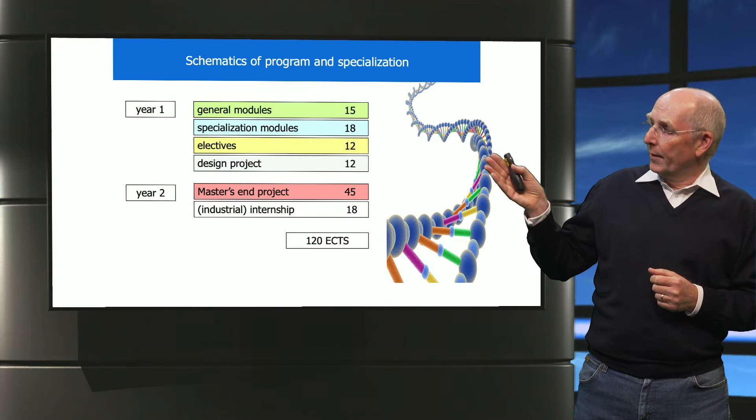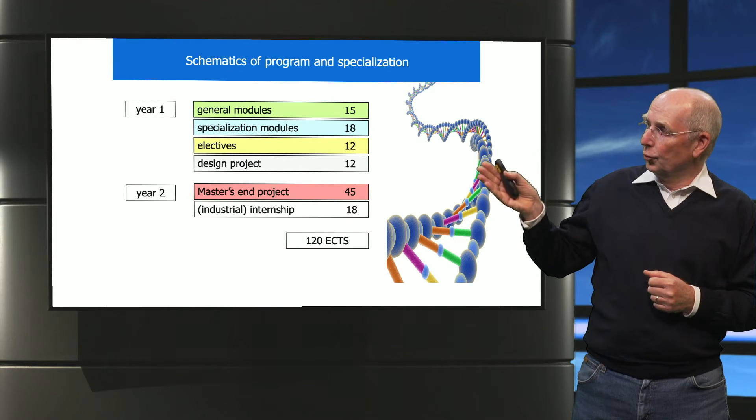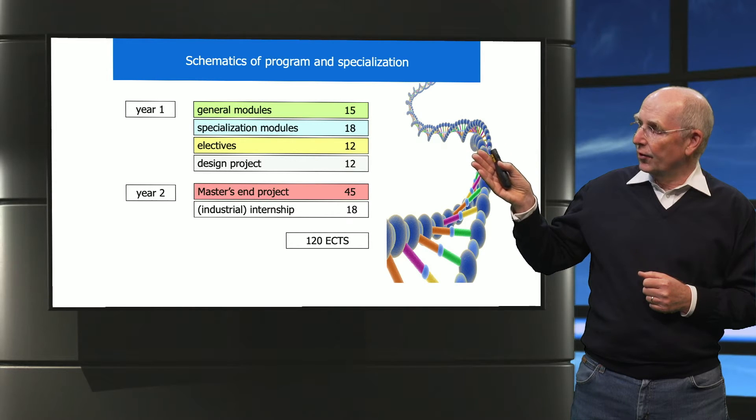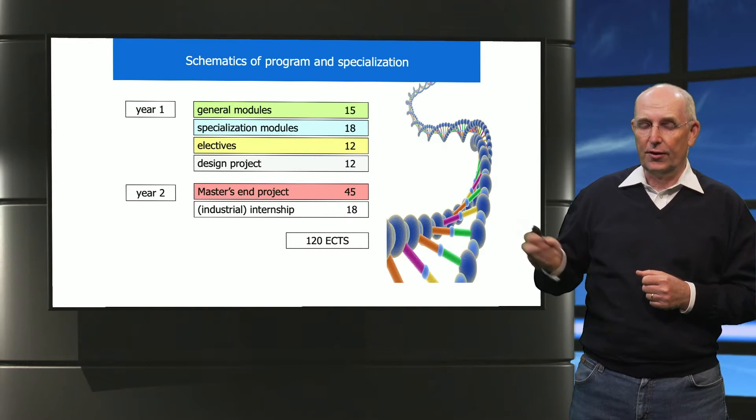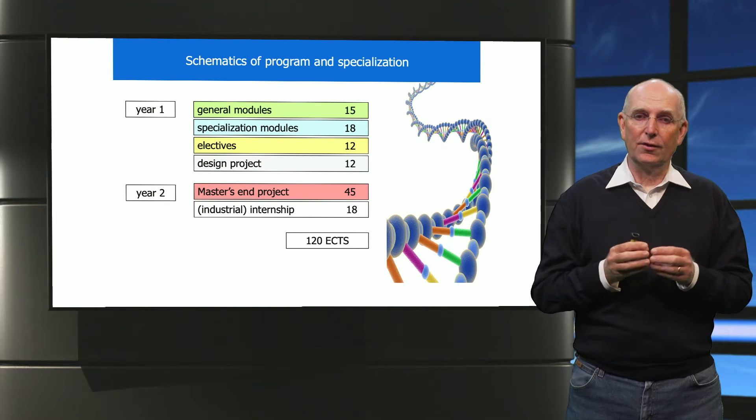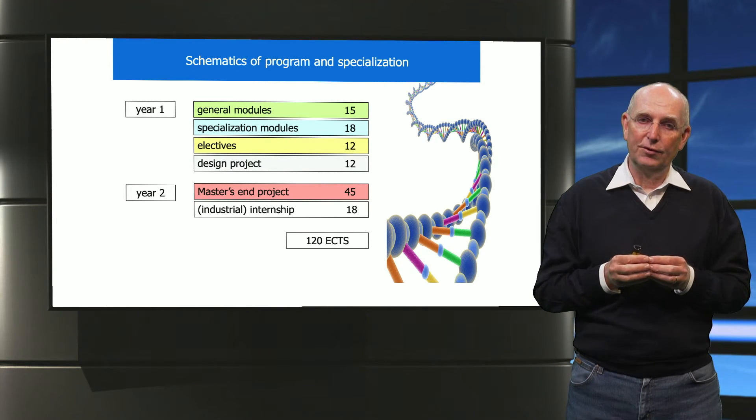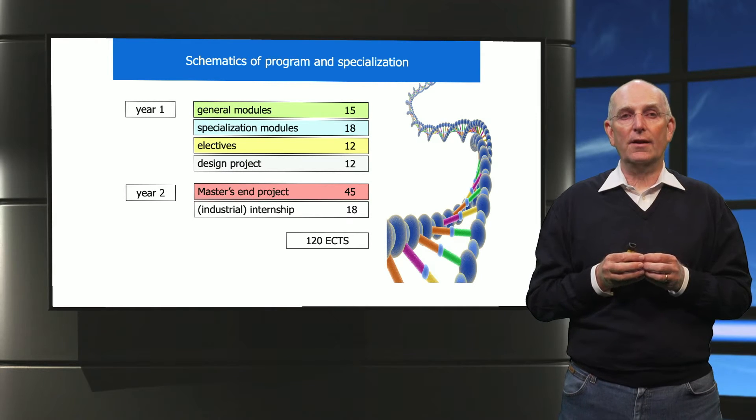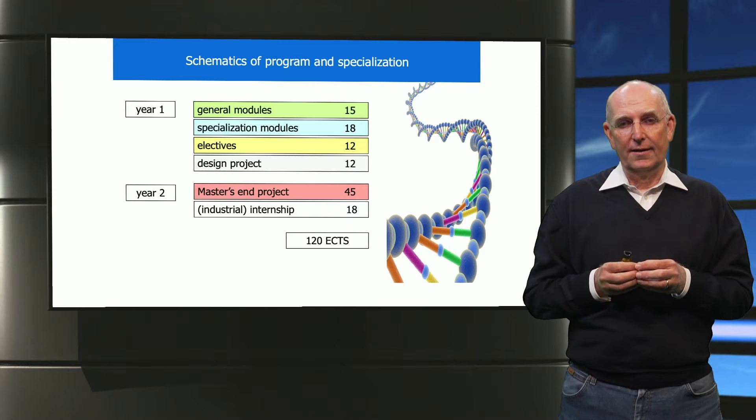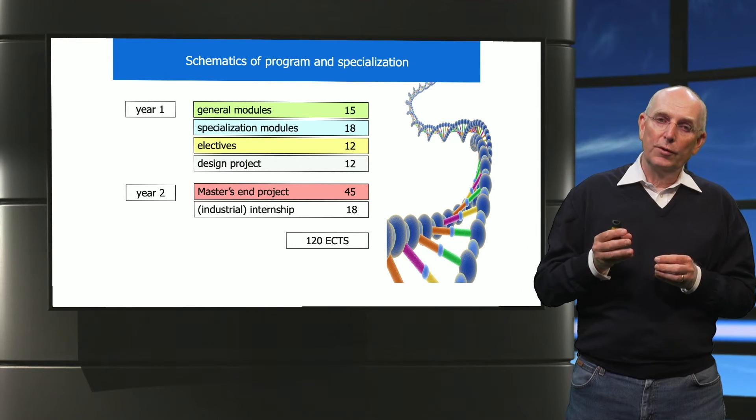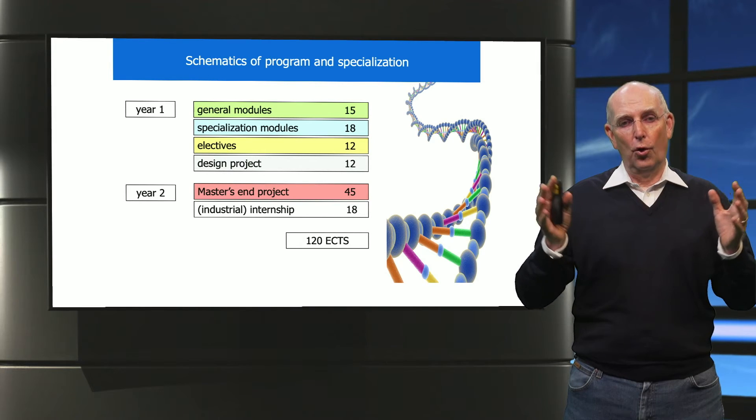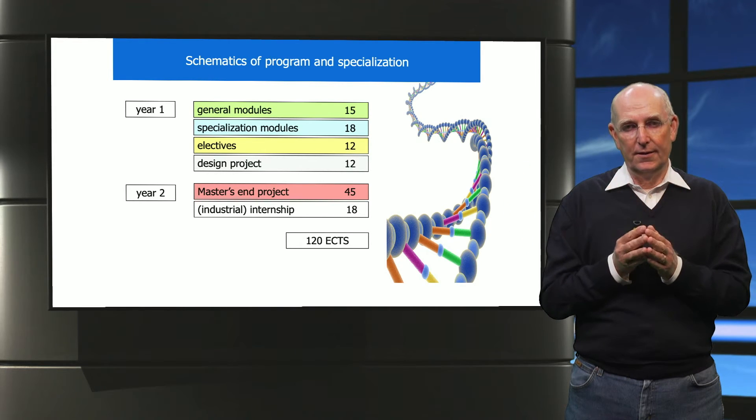The program consists of two years: the first year is theoretic in nature and the second is practical in nature. In the first year, the first part is dedicated to the general modules that every student of our education has to take, and then you also start with a specialization. In the third quarter you also get electives, and in the fourth quarter all of this knowledge comes together in the design project.